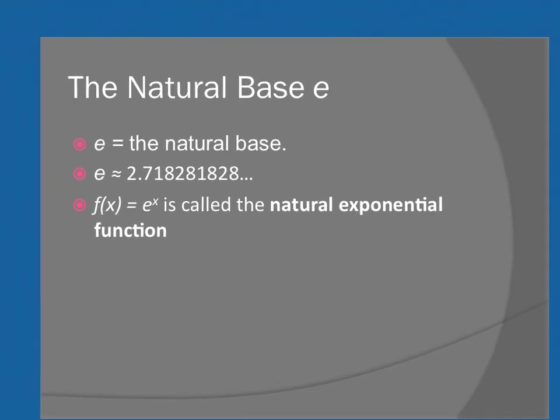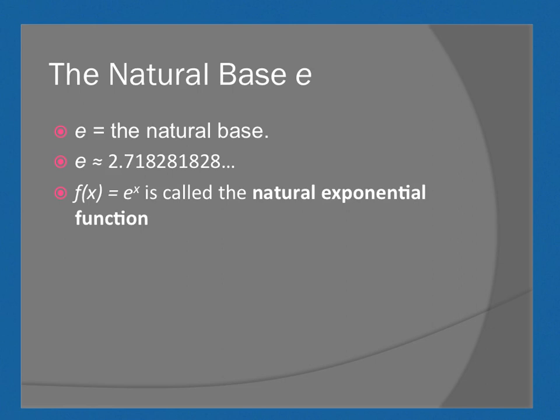Then we get to E. So E is called the natural base. E is kind of like pi. It's something that's a symbol for a larger number that is irrational. It doesn't end. It doesn't repeat. It is approximated as 2.718281828, and so on and so forth. It doesn't repeat. It doesn't end.